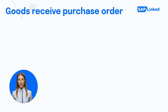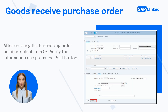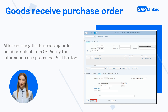You can perform a goods receipt to finish the logistics process once the delivery has been received at the receiving plant. Go to transaction code MIGO. From the drop-down list, choose A01 Goods Receipt and R01 Purchase Order, and enter the stock transfer order number. All data will be populated automatically. After entering the purchasing order number, select Item OK, verify the information, and press the Post button.